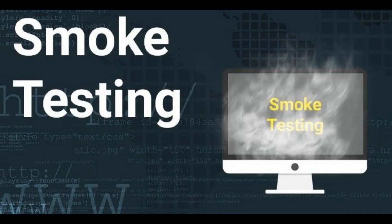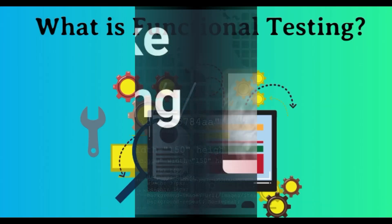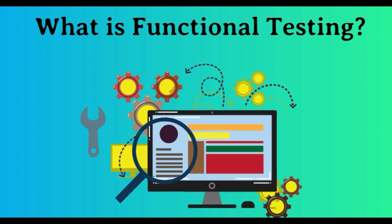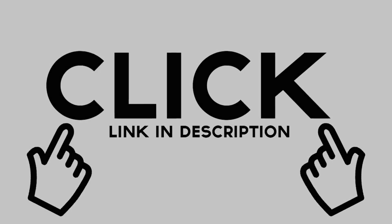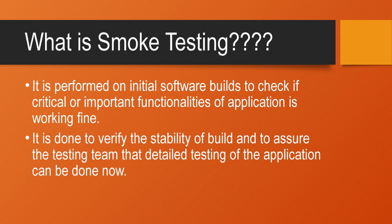Let's start with smoke testing. For knowing about what functional testing is and its various types, you can refer to my previous video — its link is provided in the description below. Smoke testing is a type of software testing approach which is performed on initial software builds to check if the critical or important functionalities of the application are working fine.